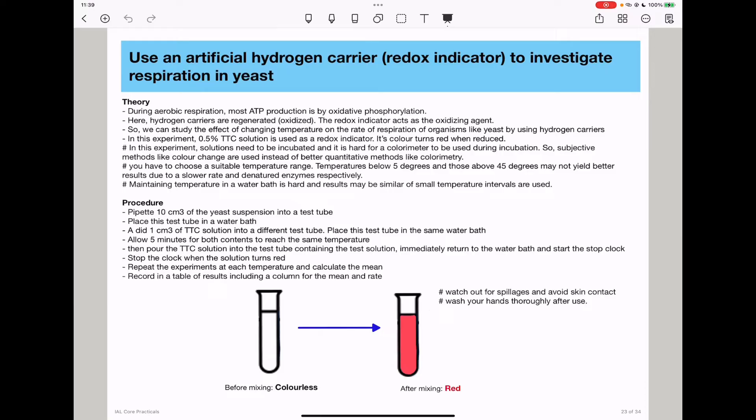But if you use temperatures above 45 or even above 40, there is a chance that enzymes are going to be denatured, and therefore the rate will also be lower. So when you're choosing your independent variable, which is temperature, get a specific range, at least 10 to above 40 degrees.